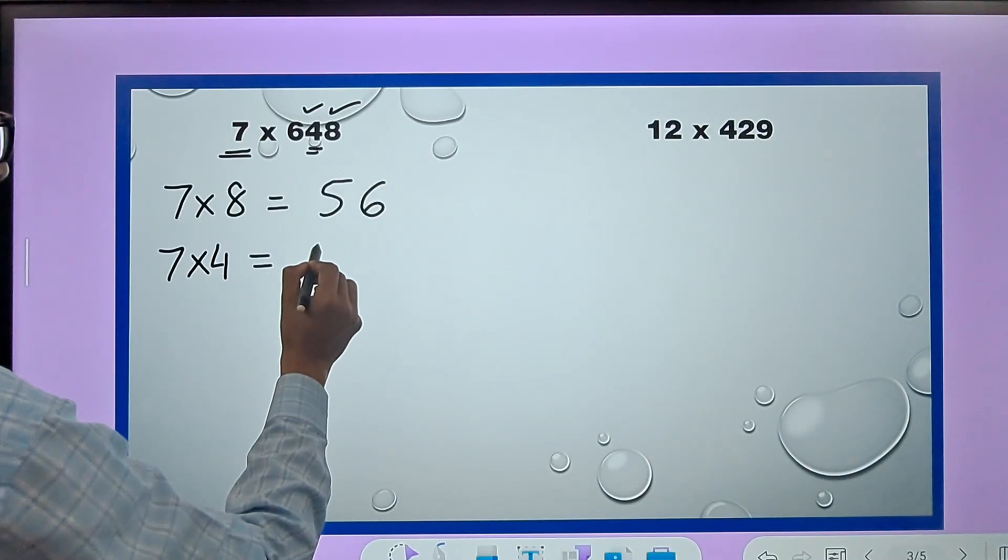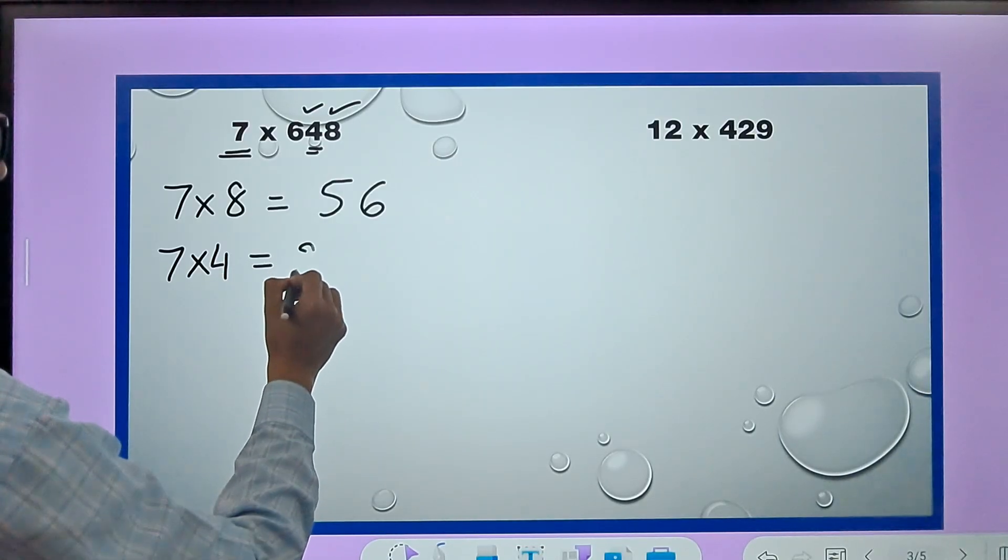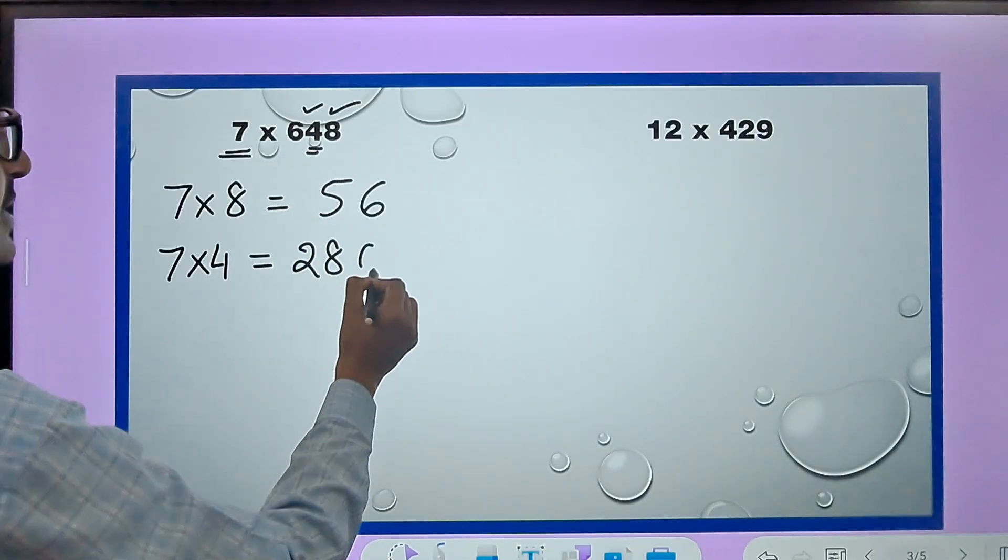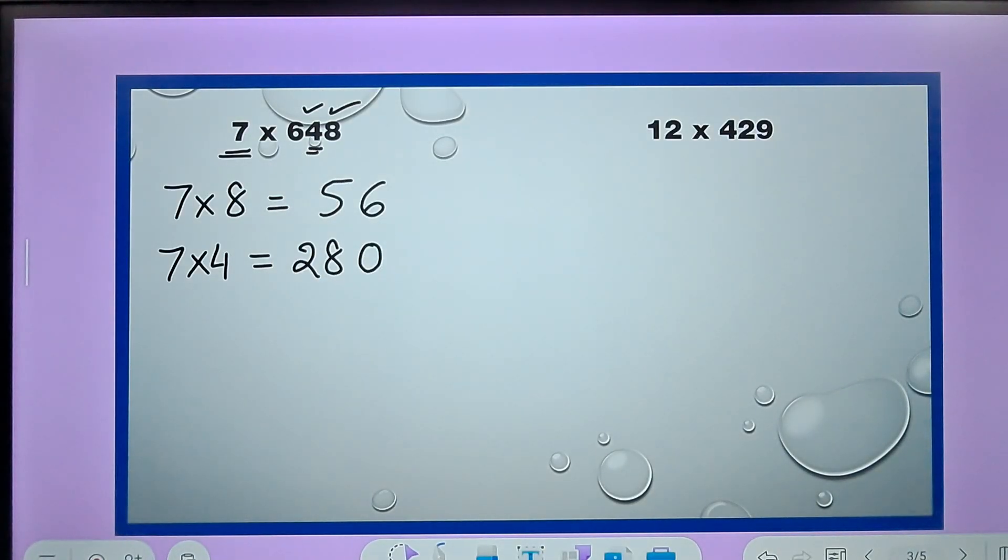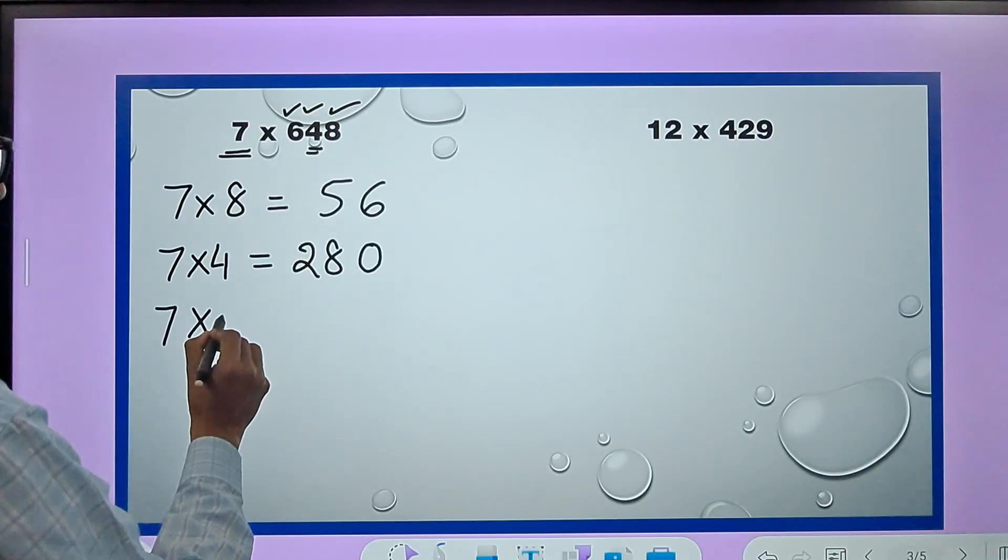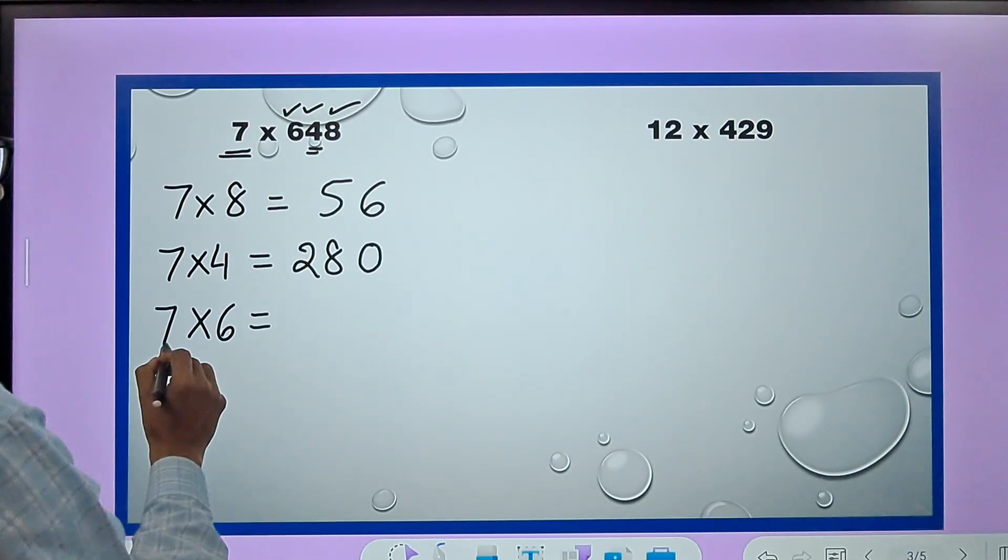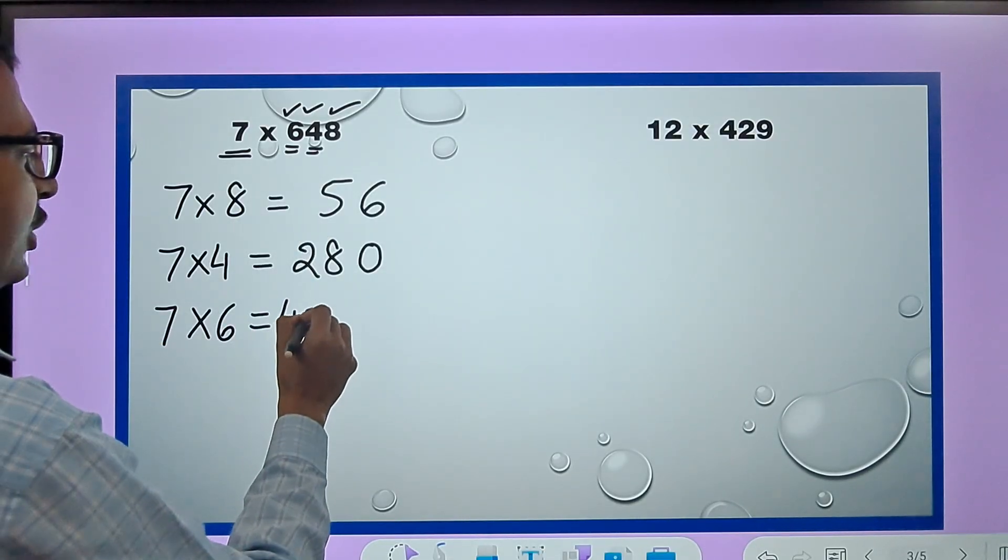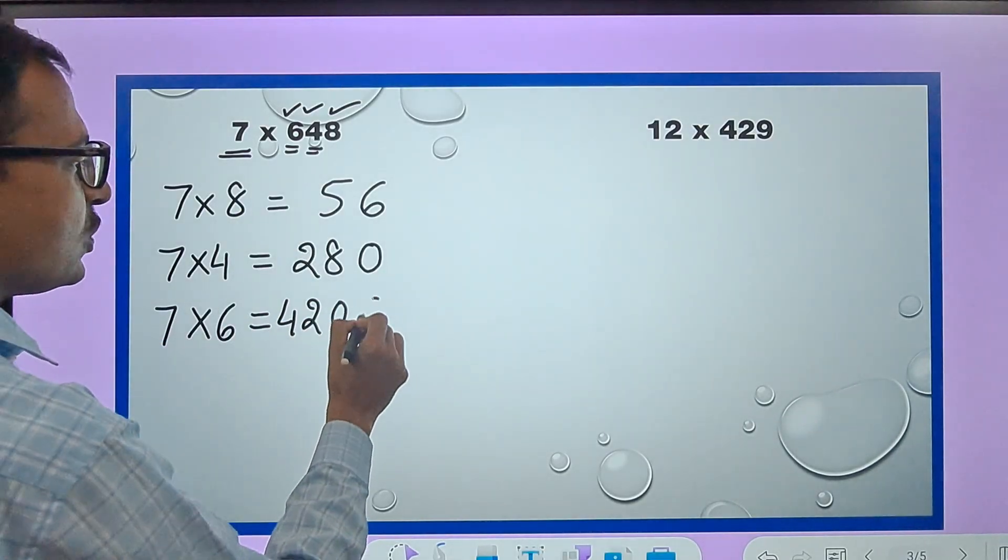Likewise, if I have to multiply 7 by the 100 place, that is 6 - 7 times 6 is 42. But 6 is in the 100 place so I will write 42 but suffix two 0s with this.